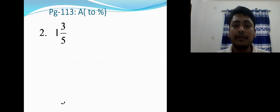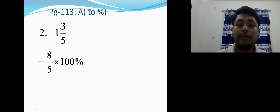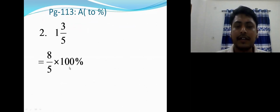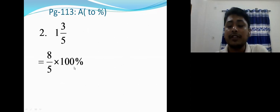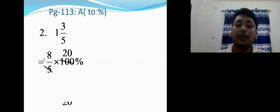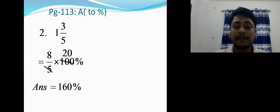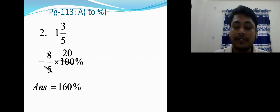Next: 1 3/5. First change to improper fraction: 5 × 1 + 3 = 8, so 8/5. Multiply by 100 percent. Cancel 5 and 100: 5 × 20 = 100. Multiply 8 × 20 = 160 percent. So 1 3/5 = 160 percent. The technique is to first change the mixed number, then multiply by 100 percent.